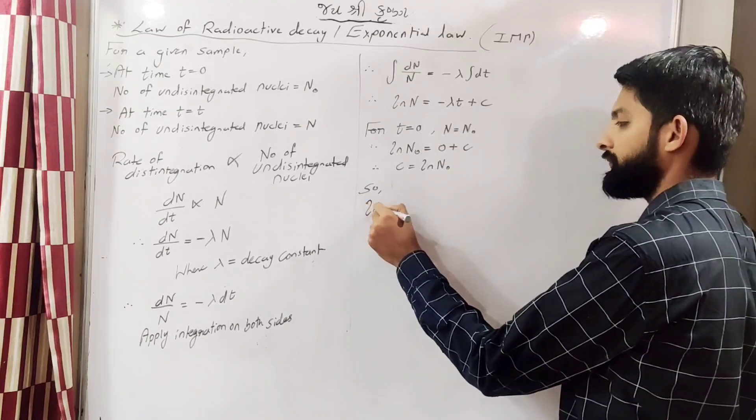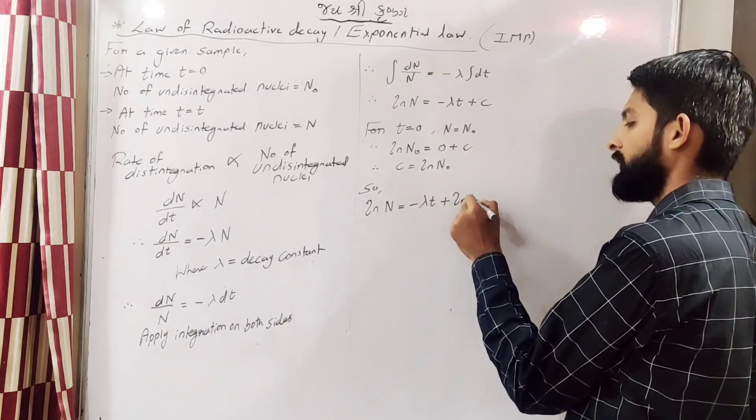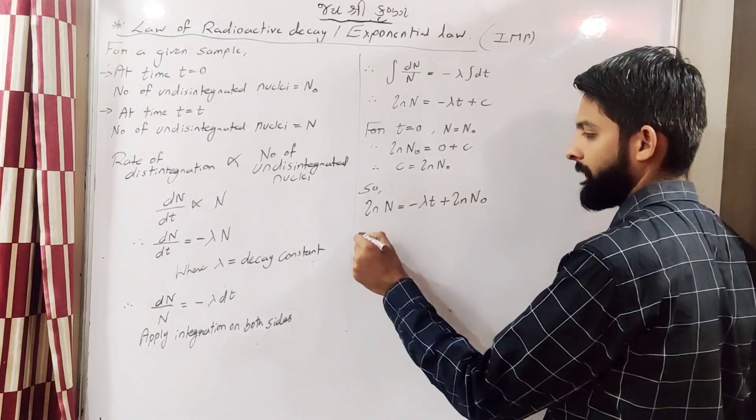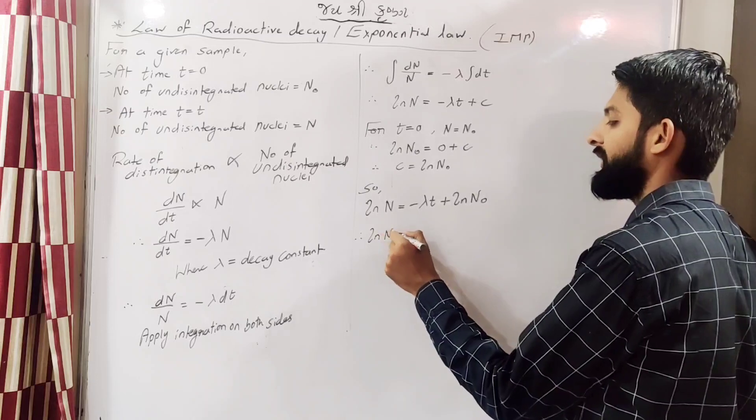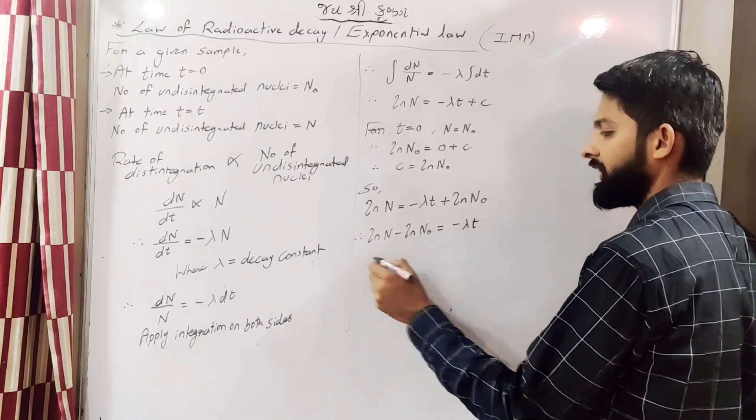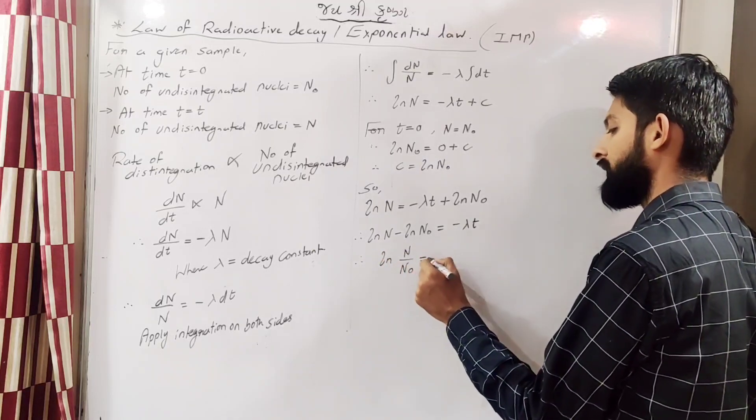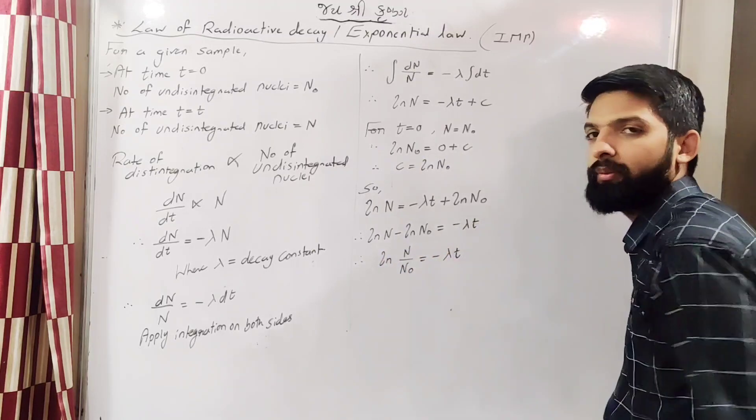Substituting this value, ln n equals minus lambda t plus ln n0. So ln n minus ln n0 equals minus lambda t, which gives ln(n/n0) equals minus lambda t.